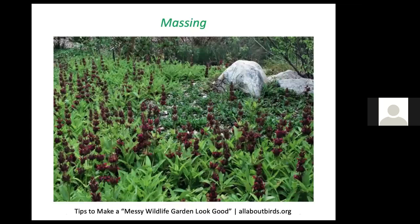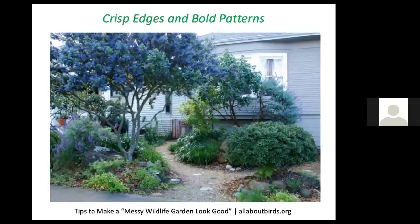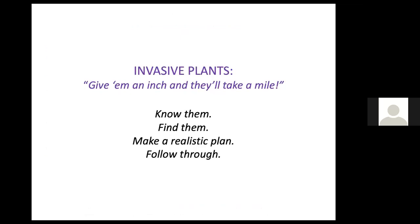One way to landscape tastefully is to have a massing of one species of plant, which can be quite impressive in its beauty. Covering the foundation — putting plants against exterior walls — doesn't have to look unkempt even when planting a variety of species serving nature. It can have a very planned look and be very pleasing to the eye. One of the first considerations when planning your landscape is doing an inventory of invasive plants. After learning how to identify them and finding them on your property, make a realistic plan for eradicating or controlling them and follow through.